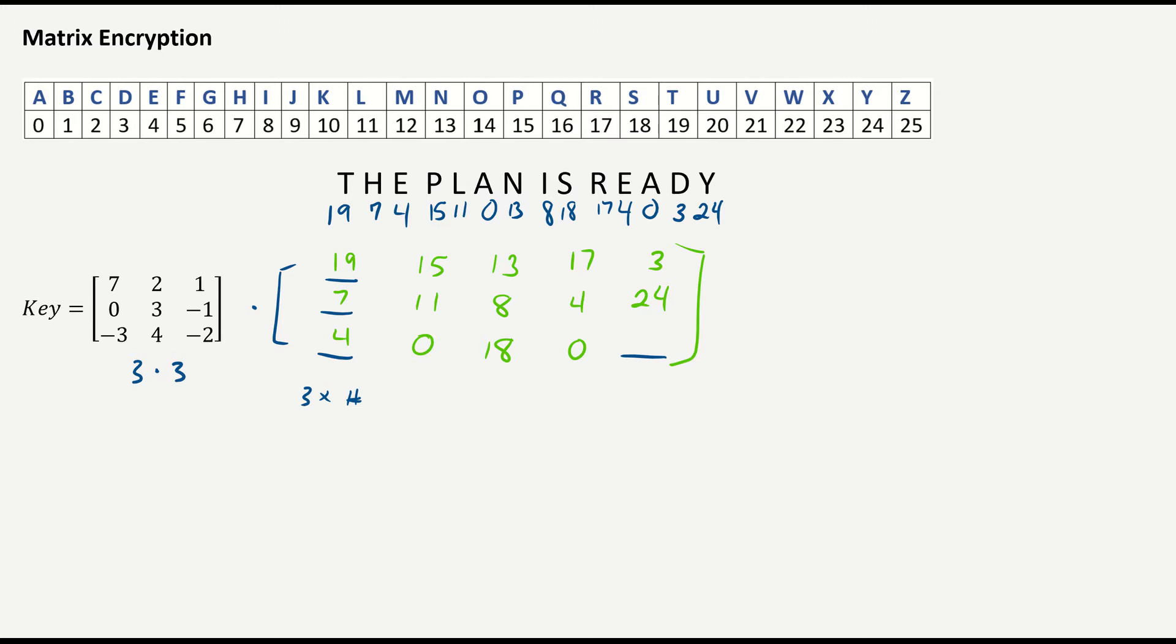And you should already have an agreed upon number that corresponds to a space in your code. We'll say a space is the number 26. So I put a 26 to fill it in. So any blank spaces left in my matrix, I'm going to fill in with a 26. And this gives me a 3x5 matrix.